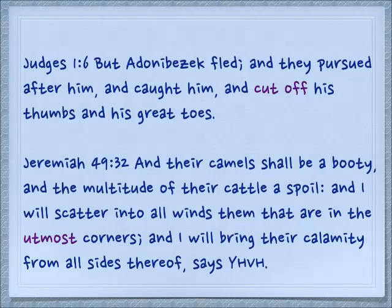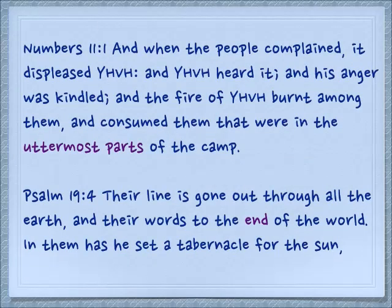Jeremiah 49:32 — and their camels shall be a booty, and the multitude of their cattle a spoil, and I will scatter into all the winds them that are in the utmost corners, the very ends, and I will bring their calamity from all sides thereof, says Yehovah. Numbers 11:1 — and when the people complained to displease Yehovah, and Yehovah heard it, and his anger was kindled, and the fire of Yehovah burned among them and consumed them that were in the utmost parts of the camp — the place where the camp is cut off, it's finished. Psalm 19:4 — their line is gone out through all the earth, and their words to the end of the world.